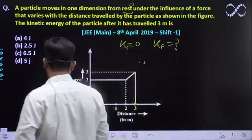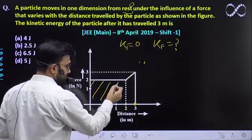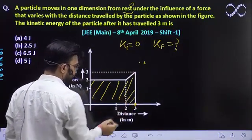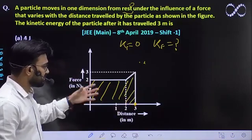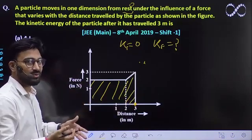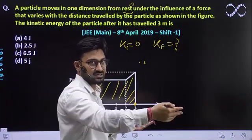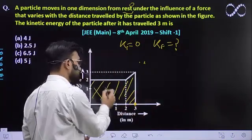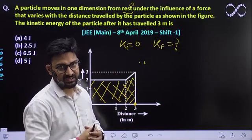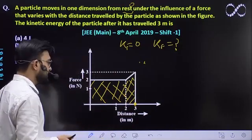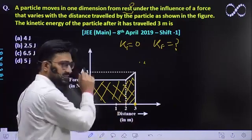We already know that the area under force and displacement graph gives work done. So how much work done will we calculate? And that work done will be equal to the increase in its kinetic energy. Whatever work the force does, it would be in the form of increase in its kinetic energy.